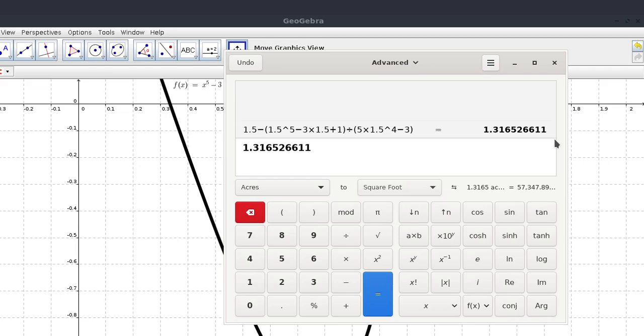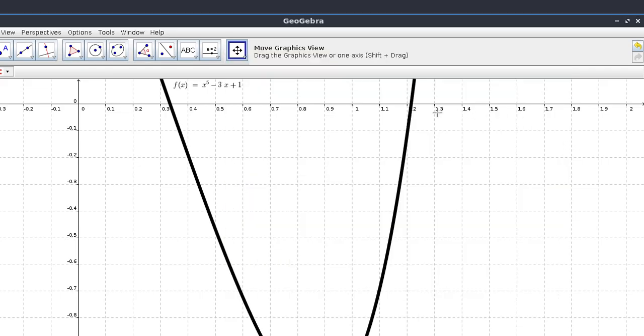It seemed to be taking us back towards the root. It seemed to be taking us back towards the root. So when we use 1, it was close enough. But anyway, what we want to do is use 0.4.